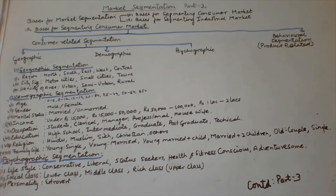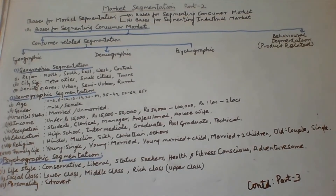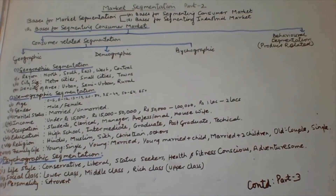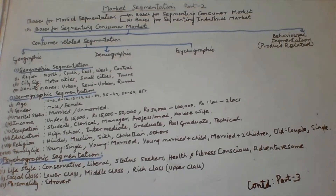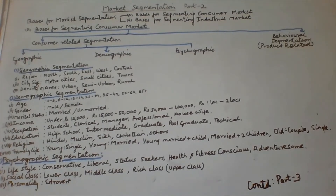Another important demographic factor is gender — whether the product is related to both males and females (unisex) or specifically to male or female customers. Gender segmentation has long been used in clothing, hairdressing, cosmetics, and magazines. Marital status also plays a role, as a married person's spending pattern differs significantly from an unmarried person, who tends to spend the majority of income on themselves. Income plays a very important role — society is divided on the basis of income earned.